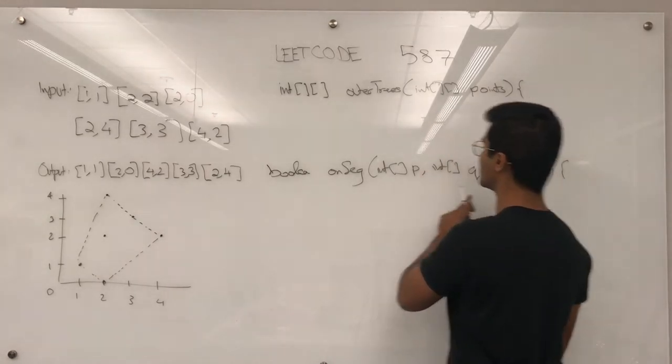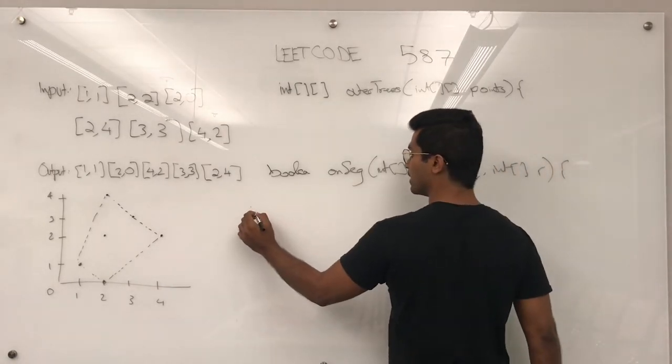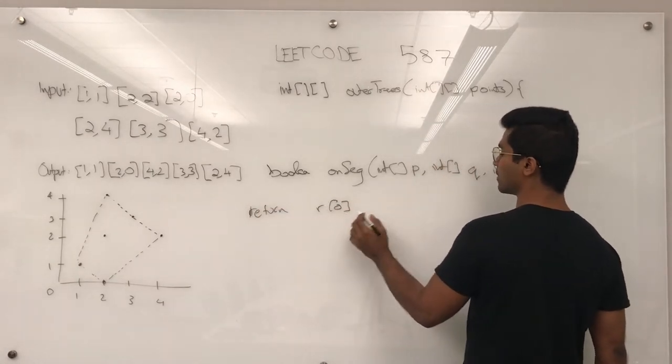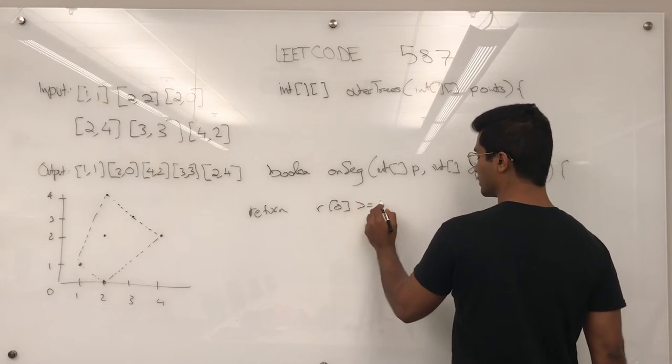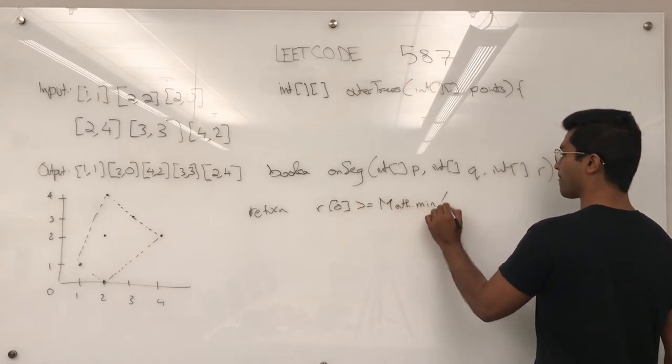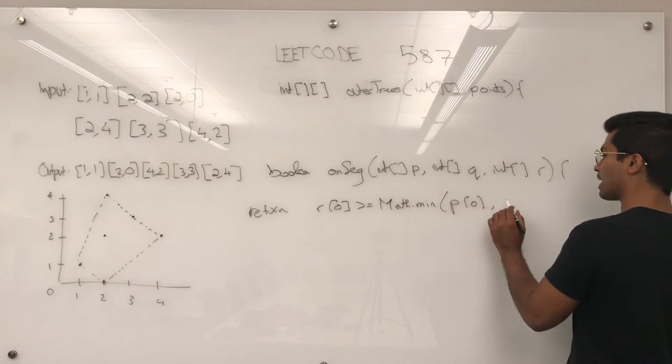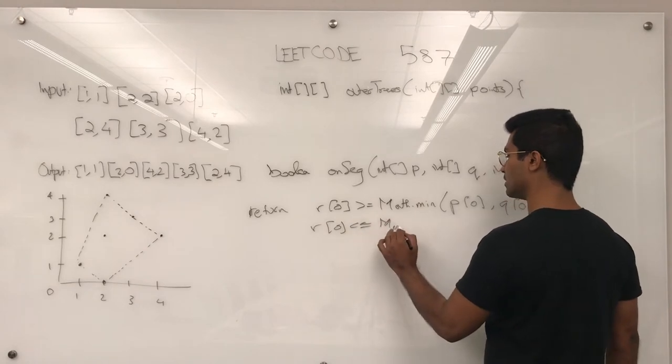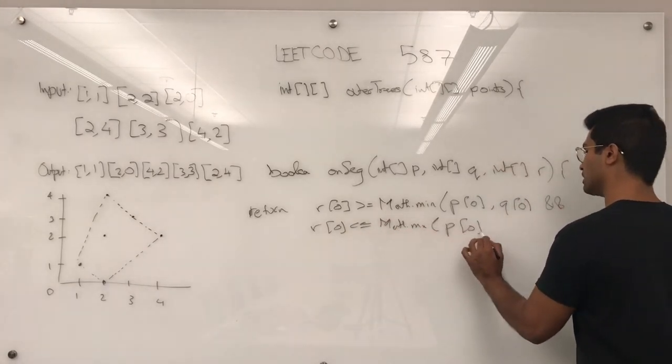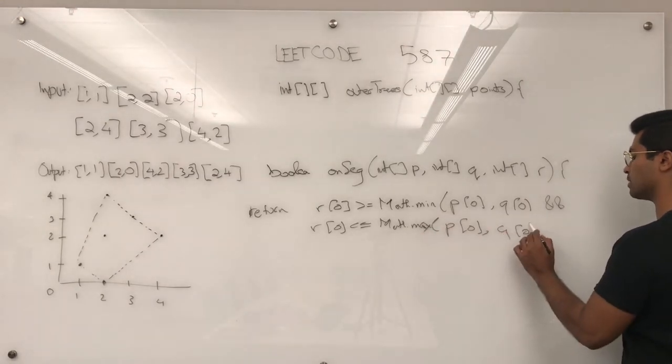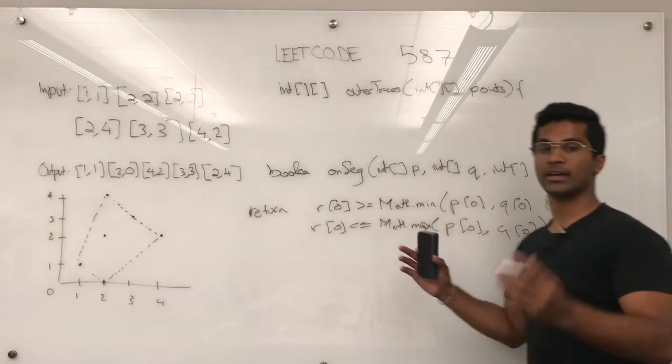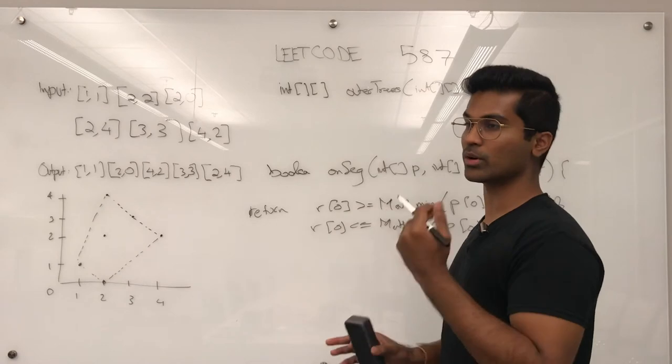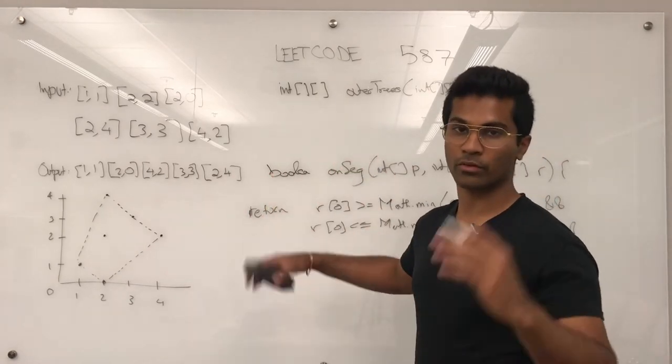Let's see if r lies on point p and q. So return r of 0, which means rx is greater than or equal to the minimum of p of 0 and q of 0, and r of 0 is less than or equal to max of p of 0 and q of 0. What this means is that the x coordinate is between the coordinates of p and q, the r coordinate. The r's x coordinate is between p and q's x coordinate. Same thing, we have to check for the y.